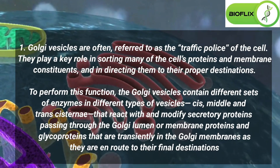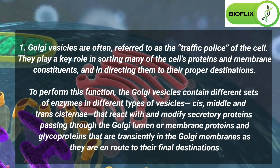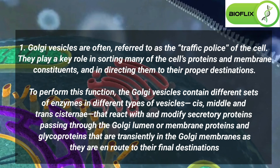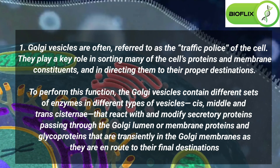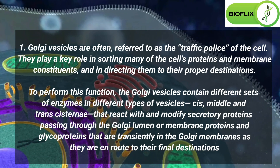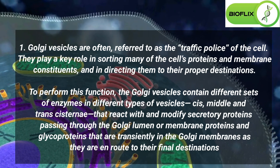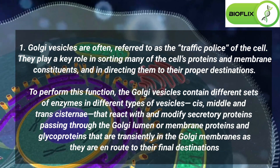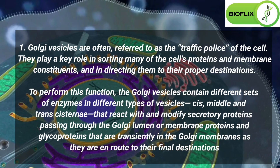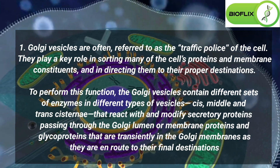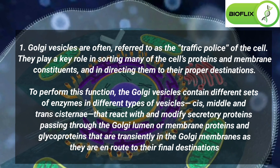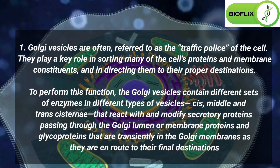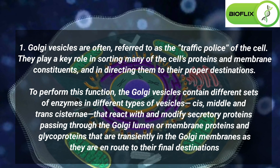Golgi vesicles are often referred to as the traffic police of the cell. They play a key role in sorting many of the cell's proteins and membrane constituents, and in directing them to their proper destinations. To perform this function, the Golgi vesicles contain different sets of enzymes in different types of vesicles — cis, middle and trans-cisternae — that react with and modify secretory proteins passing through the Golgi lumen, or membrane proteins and glycoproteins that are transiently in the Golgi membranes as they are en route to their final destination.